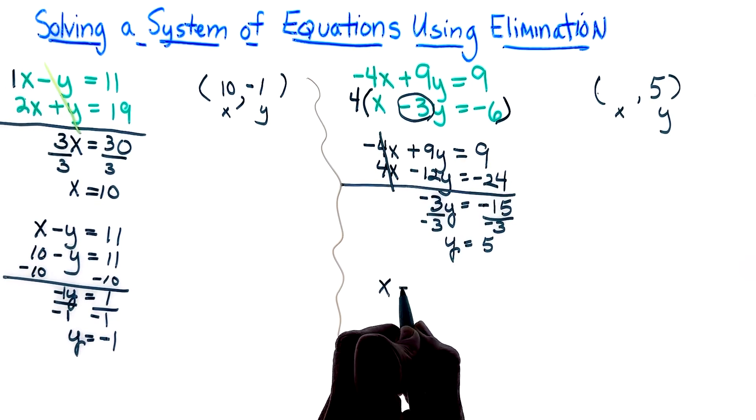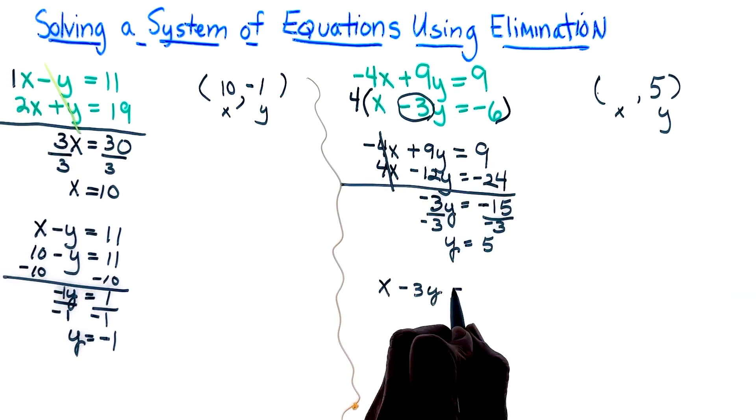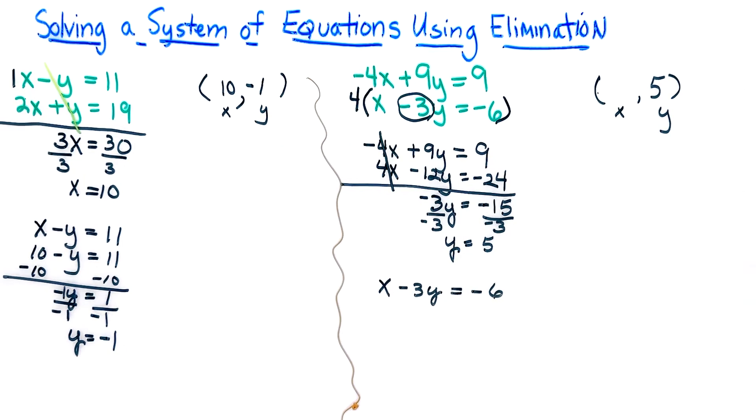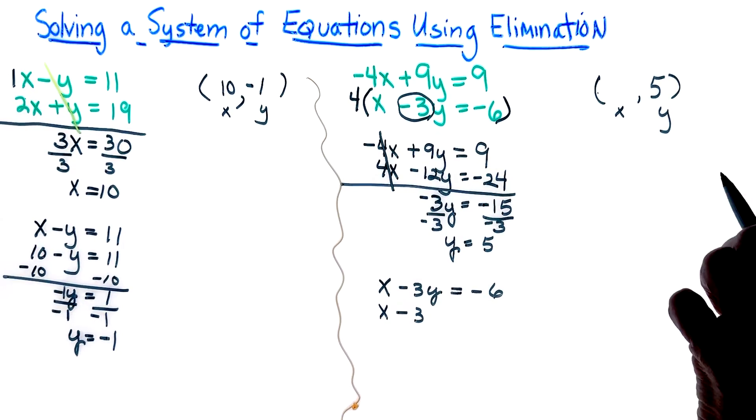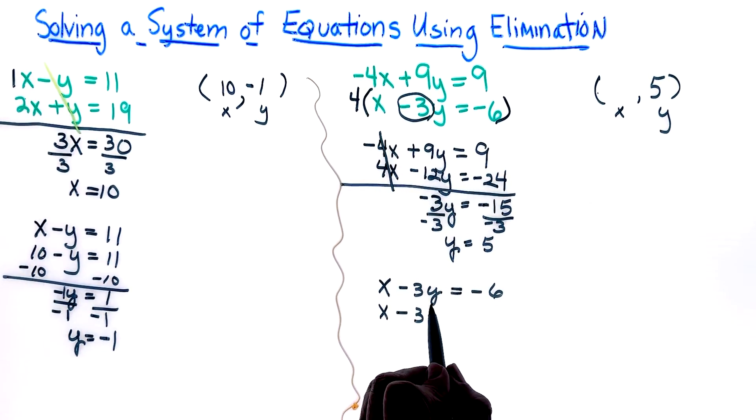So x minus 3y equals negative 6. I know that I'm looking for my x, and so I am going to substitute in for my y the 5 that we found.